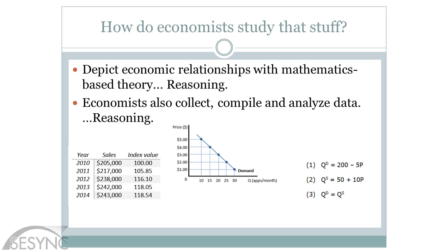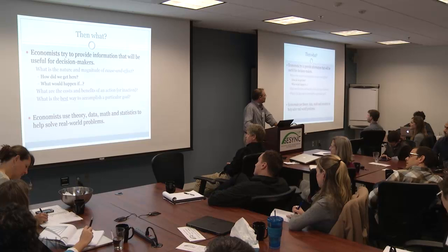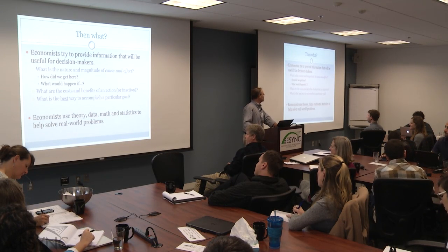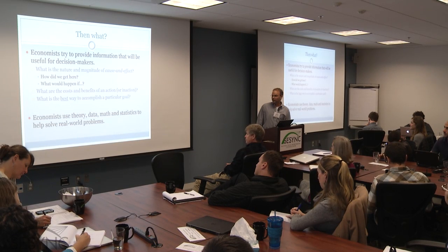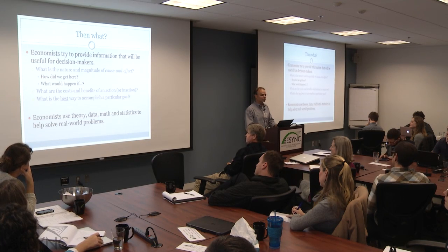How do economists study all that? Math, statistics, data, reasoning — we use a lot of tools. Then we try to provide useful information to decision makers. We kind of live in the world of what-ifs: what might happen if, or how did we get here? We look at cause and effect, costs and benefits of an action or inaction, and what's the best way to accomplish a particular goal. We use theory, data, math, and statistics to hopefully make the world a better place and help solve problems.